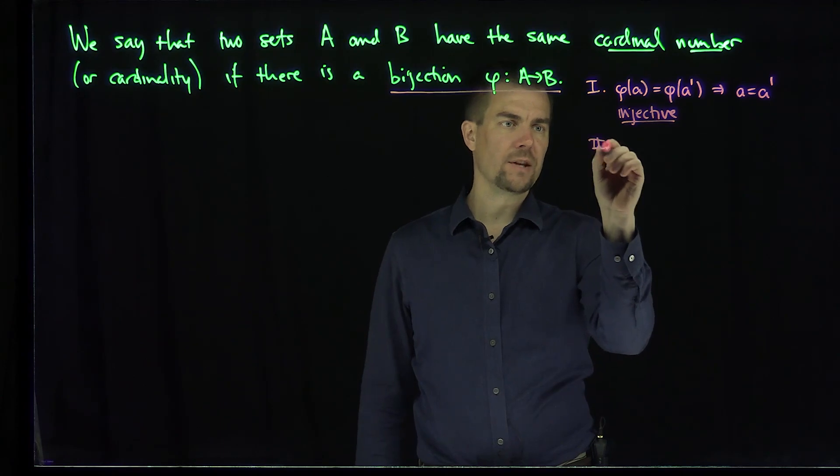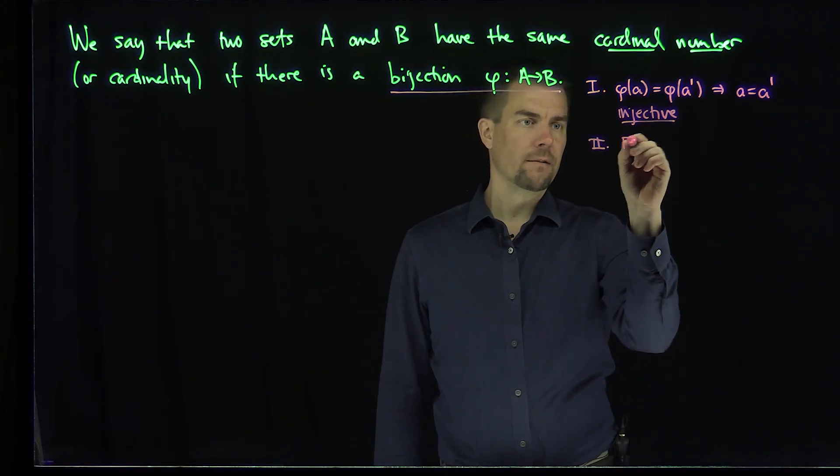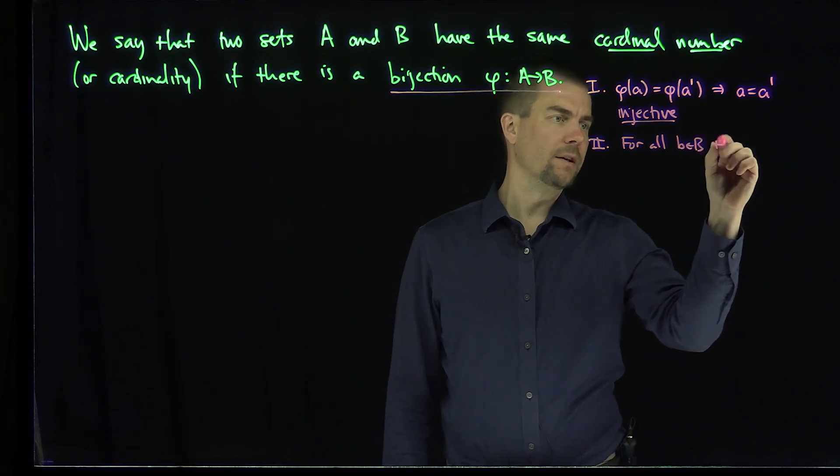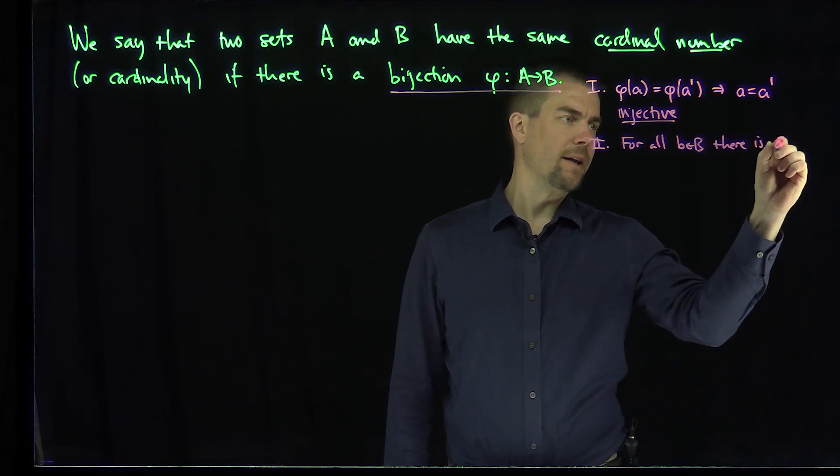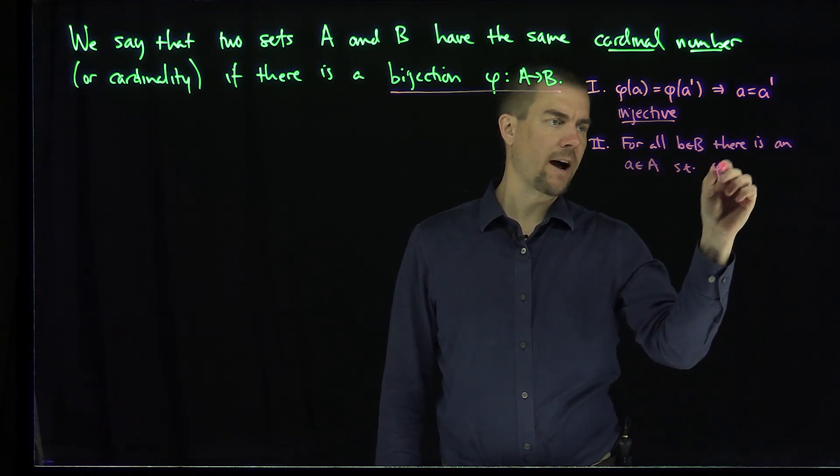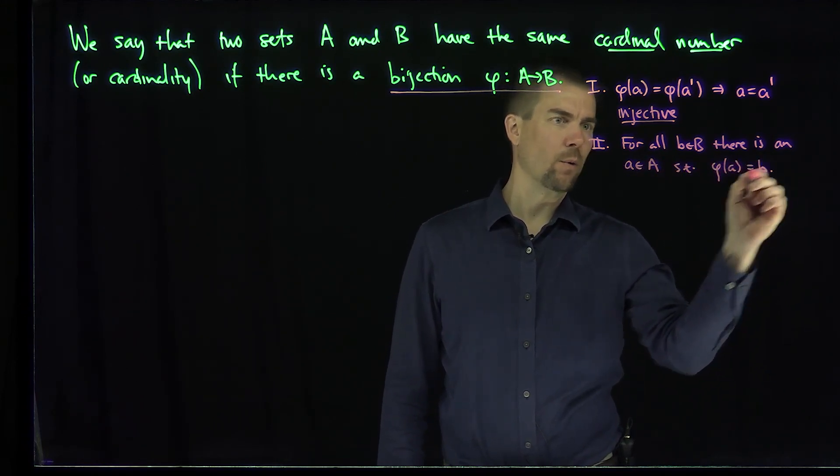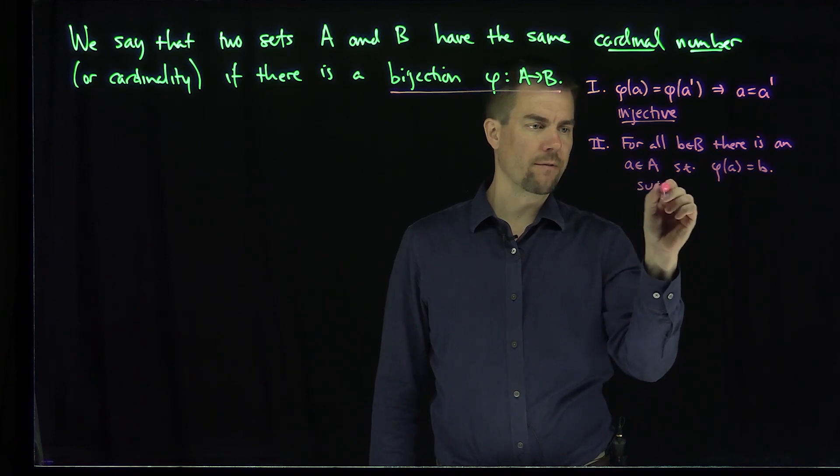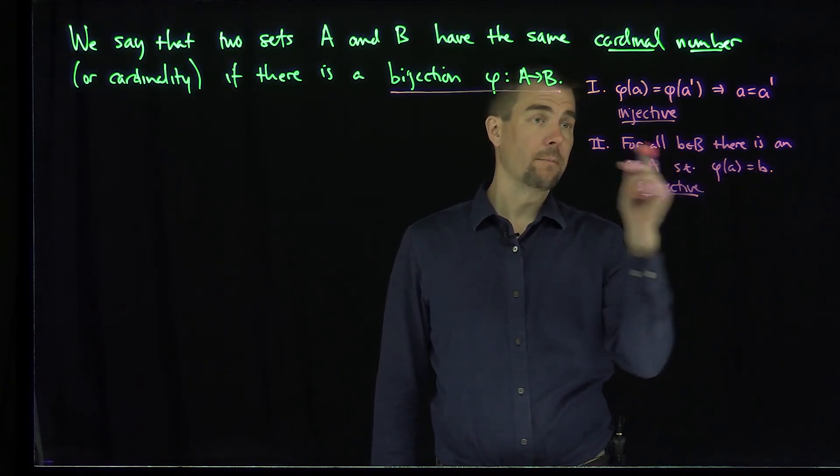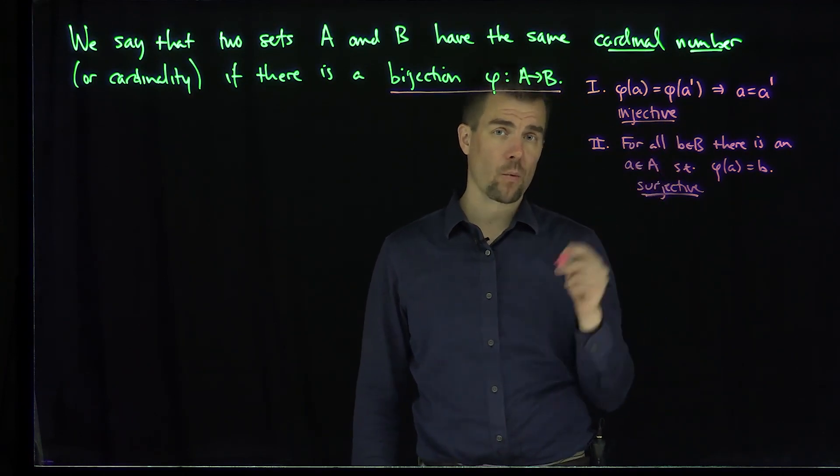And the second condition that we need is that for all B in B, there is an A in A such that phi of A is equal to B. This is the notion of the function phi being surjective. So you map to everything in B, and you only map to everything in B in exactly one way.